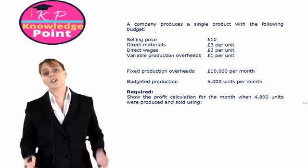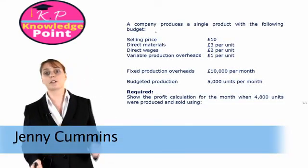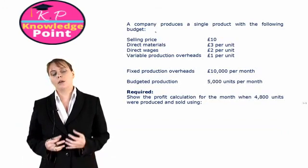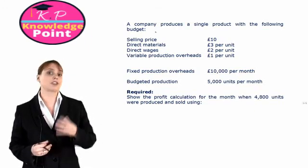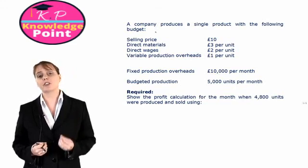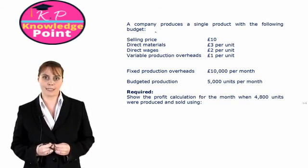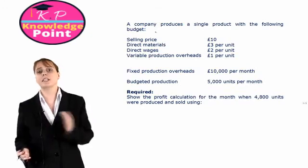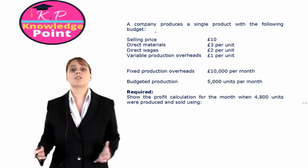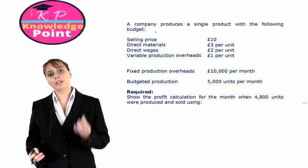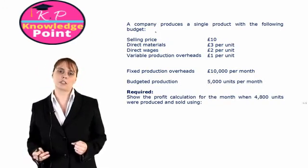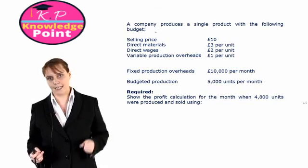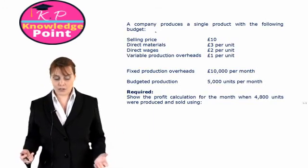In this session, we are going to continue on with our profit calculations under a marginal costing system and an absorption costing system. But now we're going to see an additional complication we need to consider in relation to our absorption costing profit calculation. In the last session, we looked at a straightforward profit calculation under each of the two systems. We're going to do those profit calculations again, but now we're going to see in our absorption costing system how we deal with any under or over absorption as part of our profit calculations. So we have another exercise here.